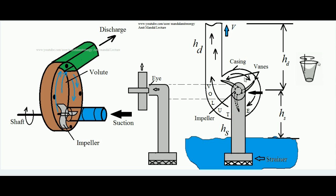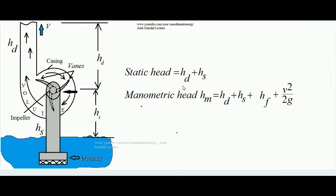When water rotates with the impeller, water is actually thrown to the volute of the centrifugal pump. Over the volute, high pressure water accumulates and due to that high pressure it goes out from the corresponding exit toward the destination. Now, the distance between the center of the impeller and the top surface of the water in the source tank is called the suction head, denoted by HS. The distance from the center of the impeller to the exit of the delivery pipe is called the delivery head. The sum of suction head and delivery head is called the static head of the centrifugal pump.